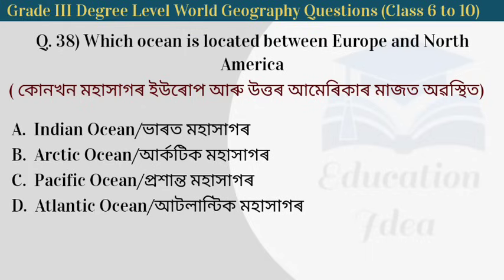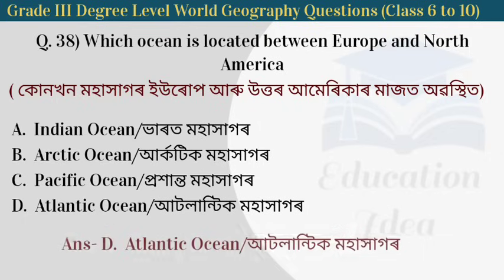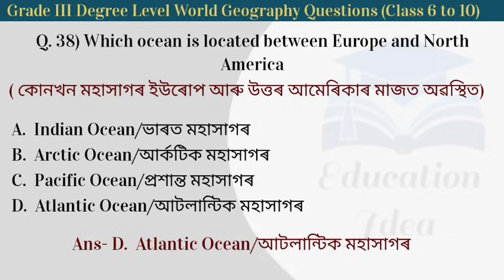Next question: which ocean is located between Europe and North America? The answer is the Atlantic Ocean — the Atlantic Ocean is located between Europe and North America.